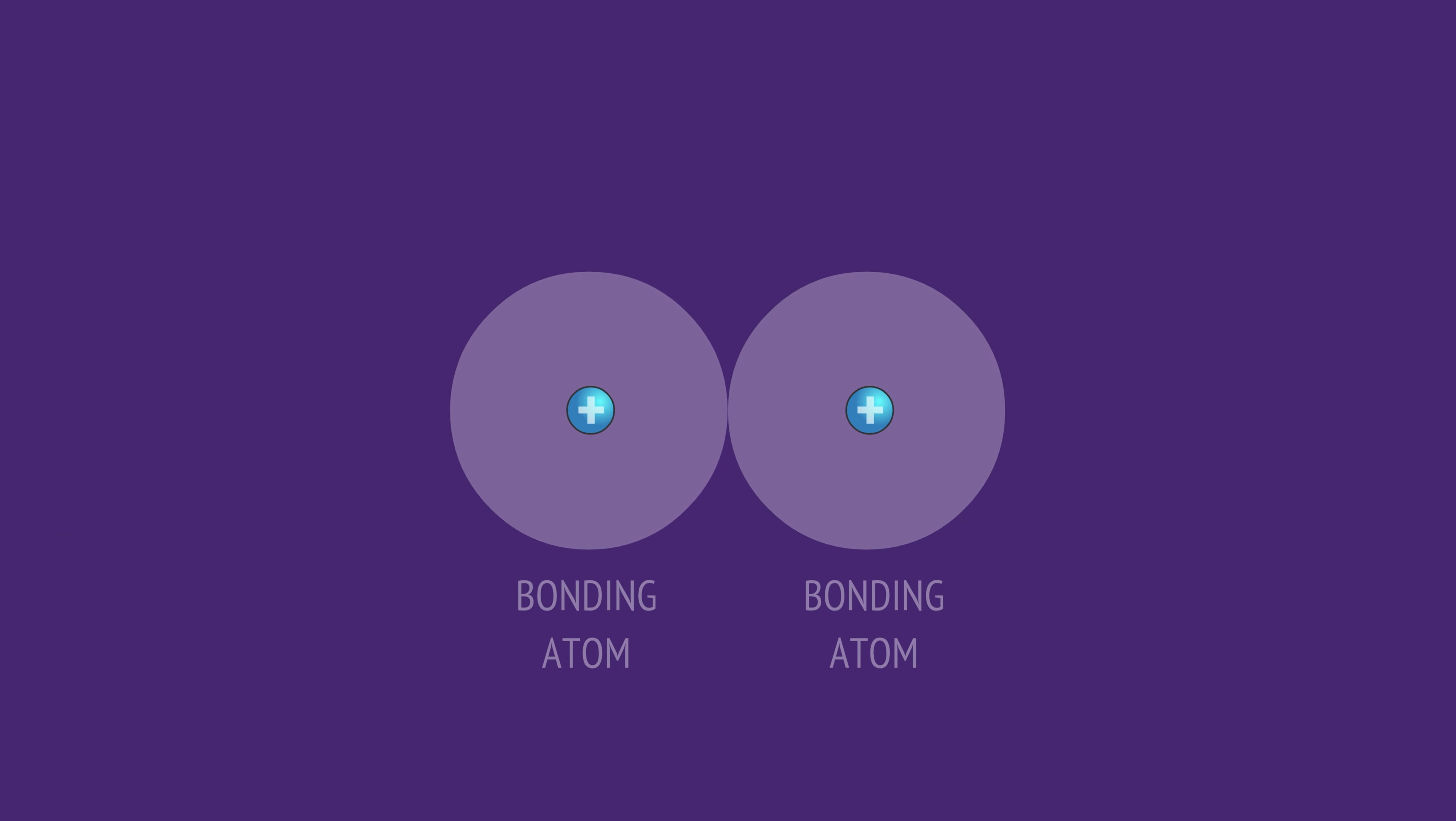Atoms bond together through the sharing or transfer of their outer, or valence, electrons. We define the electronegativity of an atom as a measure of its pull on these bonding electrons, and it's the relative difference in this pull that determines the type of bonding that occurs.